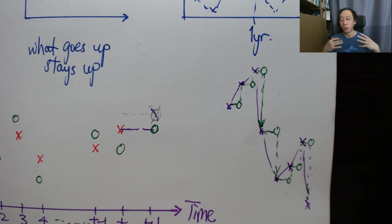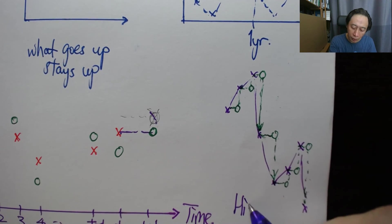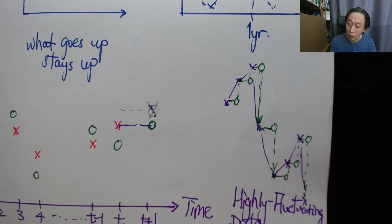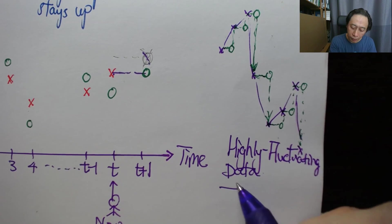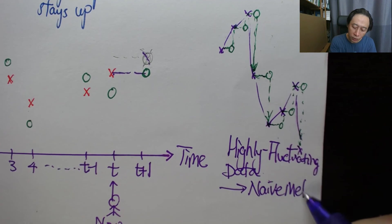However, it is more about having such a situation where the data is highly fluctuating. So highly fluctuating data, we use the naive method or the last value method.